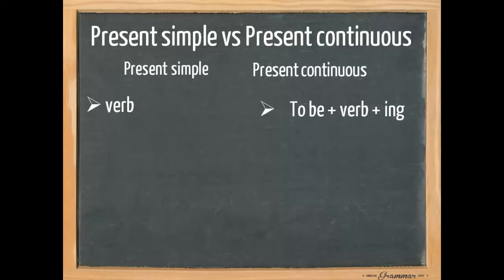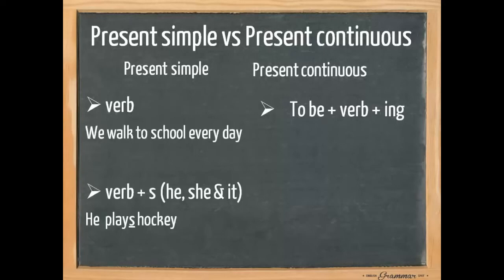An example for the present simple is we walk to school every day. With the present simple we need to pay extra attention to the third person singular he, she and it because in conjugating that verb we add an s. An example of a present continuous is they are washing their car.